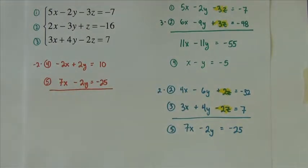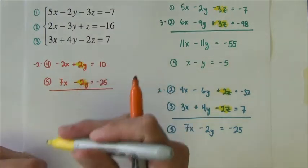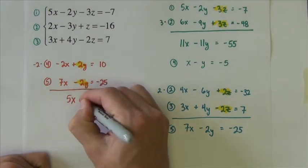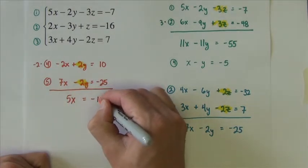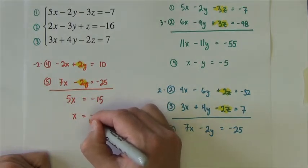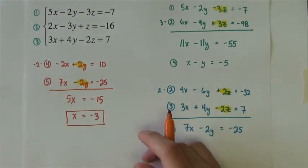Giving me negative 2x plus 2y equals 10. I'm going to just take equation five as it is. So by design, the y's now eliminate so that we have 5x equals negative 15. Divide by 5, we get x equals negative 3.